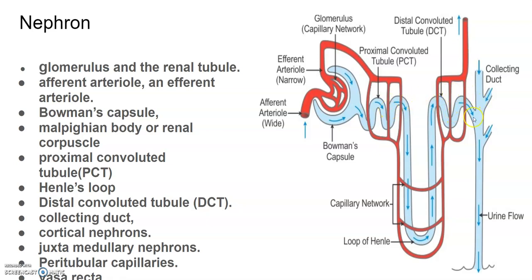The tubule continues as the proximal convoluted tubule, then forms a hairpin-shaped structure called the loop of Henle, which has a descending and an ascending limb. The ascending limb continues into another highly coiled tubular structure called the distal convoluted tubule, and many nephrons open into a straight tube called the collecting duct.